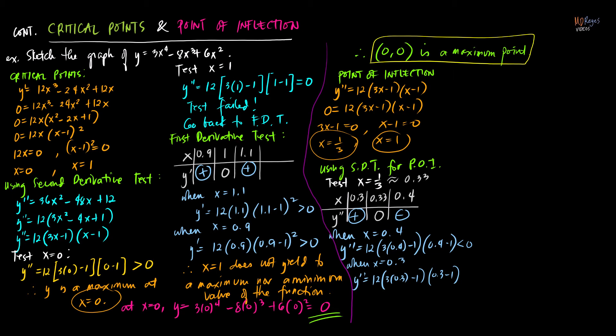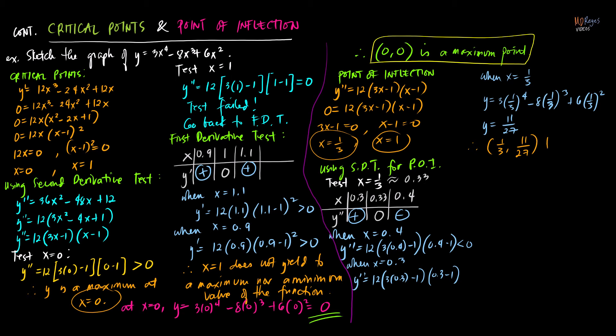What is the y-coordinate when x equals one-third? Substituting into the original function: y equals 3(1/3)⁴ minus 8(1/3)³ plus 6(1/3)². Upon computation, y equals 11 over 27. Therefore, the point with x-coordinate one-third and y-coordinate 11 over 27 is a point of inflection.